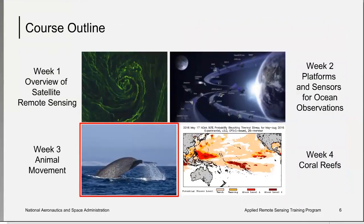This week, we will be discussing animal movement and migration. When we combine in situ data, remote sensing data, and ocean circulation and biogeochemistry models, we can gain so much more understanding about animals in the ocean — where they've been and how their habitat may change in the future. I hope your main takeaway from today is an understanding of how remote sensing data can be used to unlock the mysteries of marine animals.